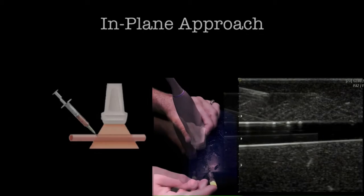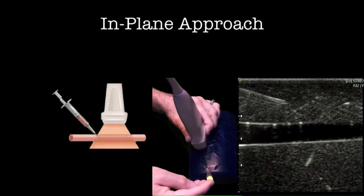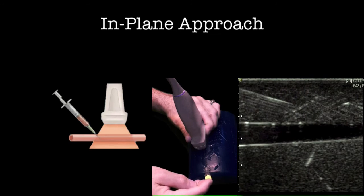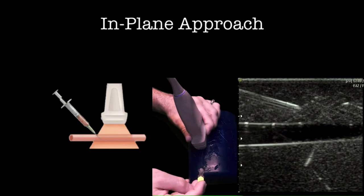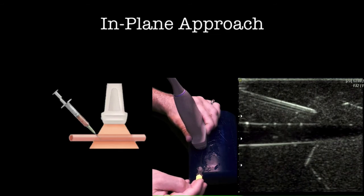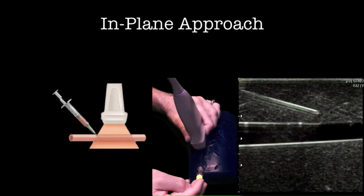The second technique is the in-plane or long axis approach. In this approach, the transducer is turned parallel to the vein. The needle is placed under the short face of the transducer and it appears as a long thin line.